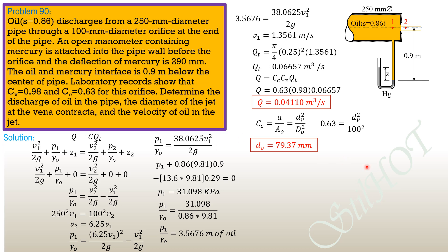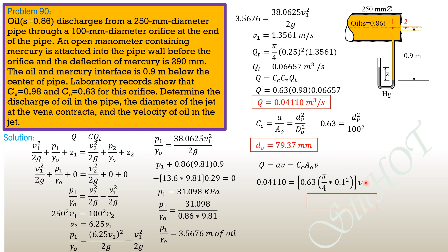For the actual velocity of oil in the jet at the vena contracta: Q_actual = A_vena contracta × V_actual = C_c × A_orifice × V_actual. So 0.04110 = 0.63 × (π/4)(0.1)² × V_actual, giving the velocity of oil in the jet = 8.306 m/s.